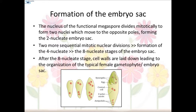Formation of the embryo sac: the nucleus of the functional megaspore divides mitotically to form two nuclei, which move to opposite poles, forming the two-nucleate embryo sac. Two more sequential mitotic nuclear divisions result in the formation of four-nucleate and later eight-nucleate stages. Mitotic divisions are strictly free nuclear — the nuclear division is not followed immediately by cell wall formation. After the eight-nucleate stage, cell walls are laid down, leading to the organization of the typical female gametophyte or embryo sac — here you can see the eight-cell stage and the mature embryo sac with synergids, egg, two polar nuclei, and antipodals.